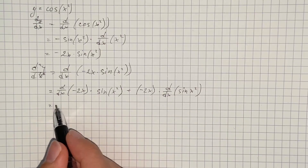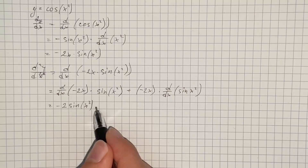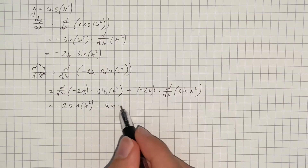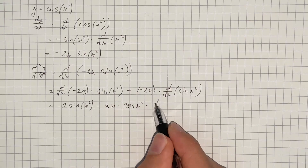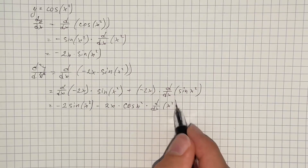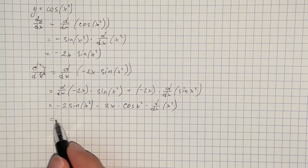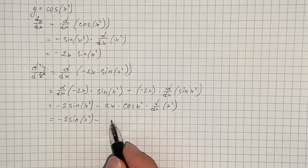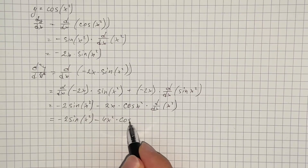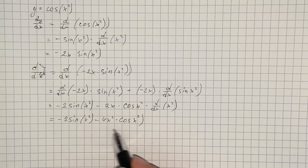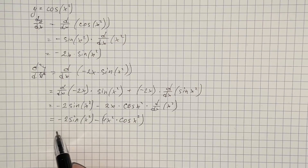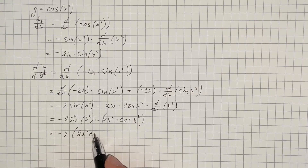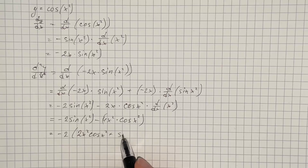Therefore we get negative 2 times sine of x squared, minus 2x times the derivative of the second term — cosine of x squared — times the derivative of the inner function, x squared. This gives us negative 2 sine of x squared minus 4x squared times cosine of x squared. We can factor out negative 2 to get negative 2 times the quantity 2x squared cosine of x squared plus sine of x squared.